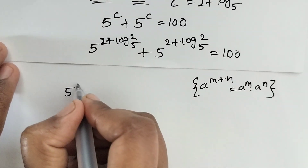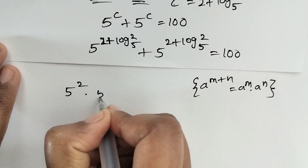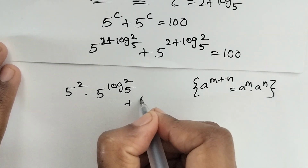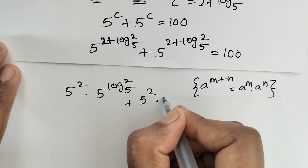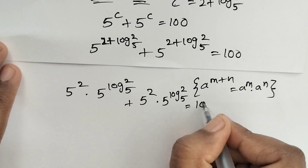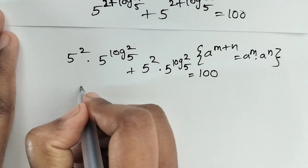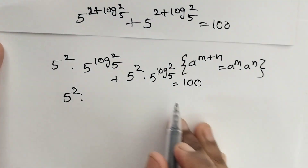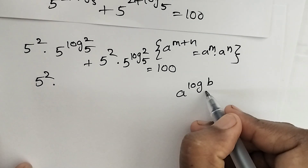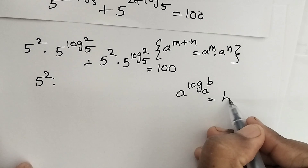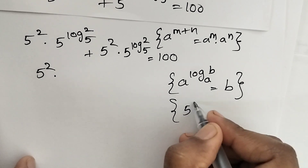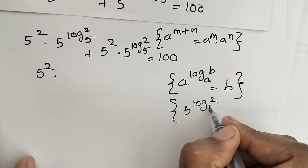Applying the exponent rule, we get 5 squared times 5 to the power of log of 2 to the base 5, plus 5 squared times 5 to the power of log of 2 to the base 5, is equal to 100. This uses the form a to the power of log_a(b) equals b.